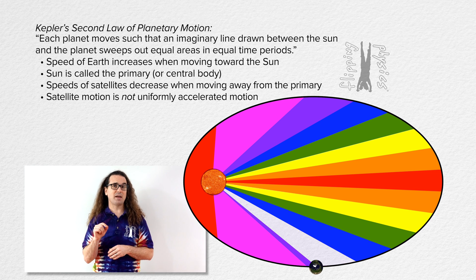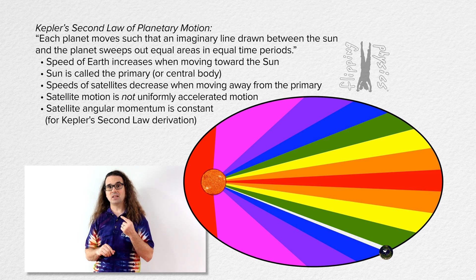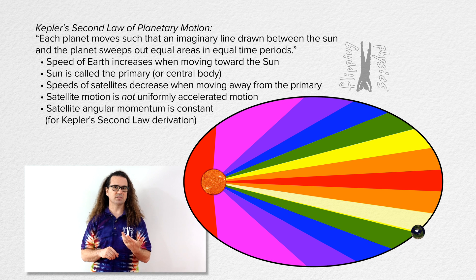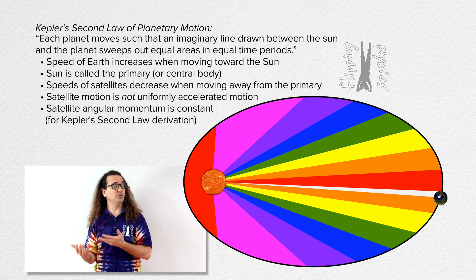In order to derive Kepler's second law, we have to remember the angular momentum of the satellite in elliptical orbit is constant. We derived that in a previous lesson, and we will derive Kepler's second law in a future lesson.